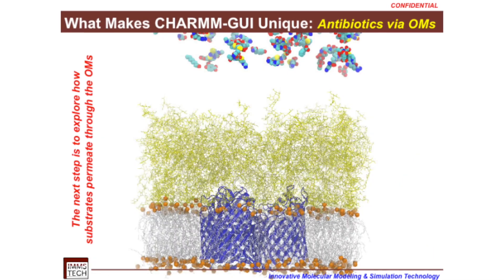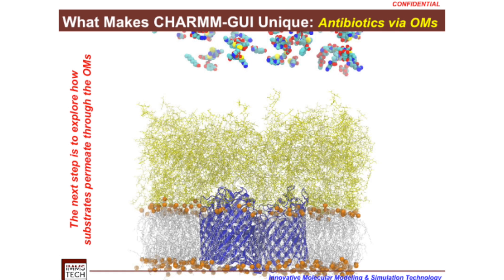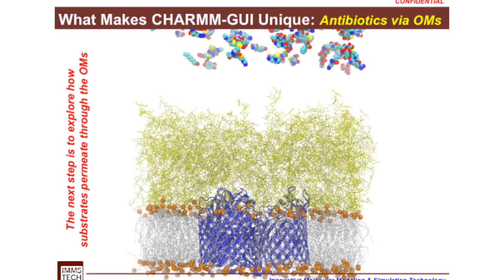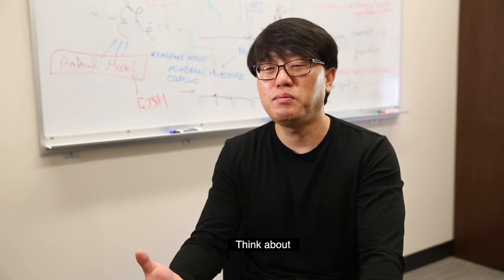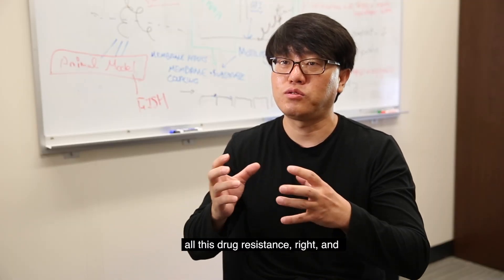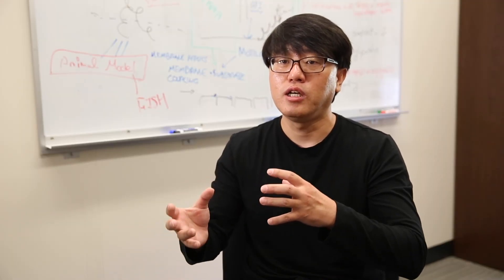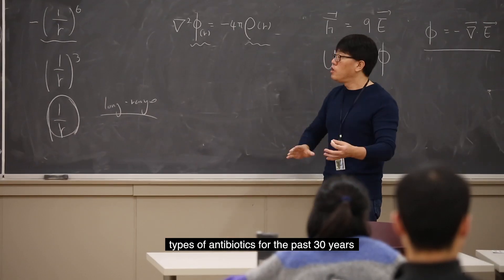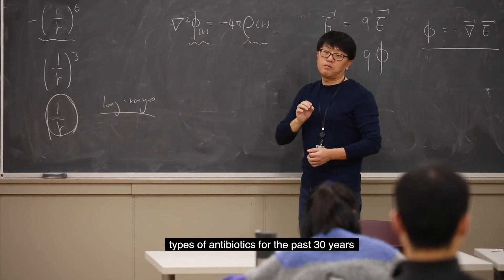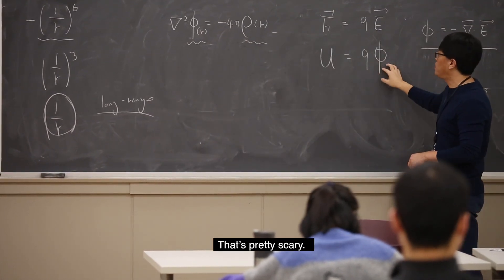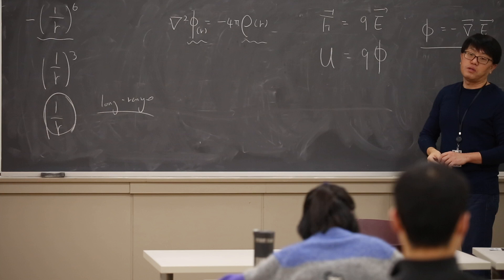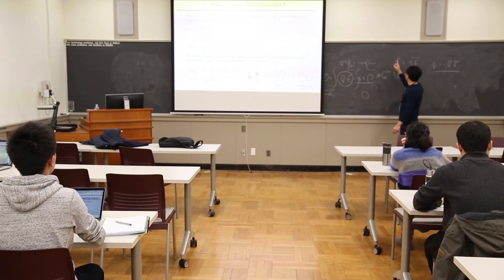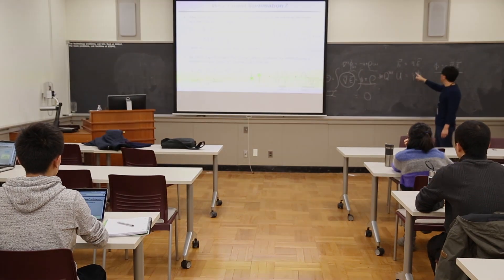Far from retiring, Im is working to understand a very important biological process called translocation, or how antibiotics get through bacteria's membrane. Think about all this drug resistance, and also the fact that we don't have any new types of antibiotics for the past 30 years. That's pretty scary. Im is one of only a handful of researchers who can model the two-layer bacterial membrane, though soon it will be available on CHARM GUI for anyone to use.